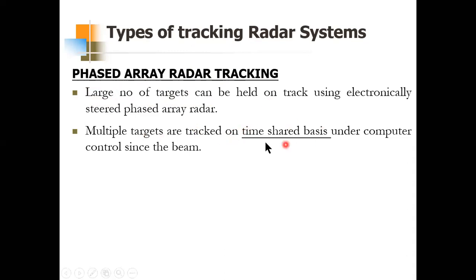Multiple targets are tracked on a time-shared basis under computer control. Recalling from the antennas subject, in a phased array each antenna element is fed with a signal of a different phase — that is what phased array radar is. The beams of an electronically scanned array can be rapidly switched from one angular direction to another, and that rapid switching is what we mean by time-shared basis.